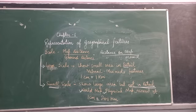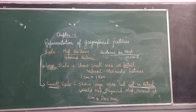Map distance means the distance on the map — how much is the distance between two places on the map. Ground distance is the distance of any two places on the ground. So the ratio between the map distance and the ground distance is known as the scale of the map.